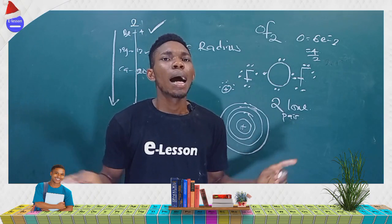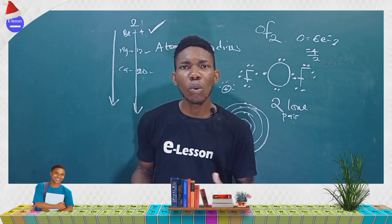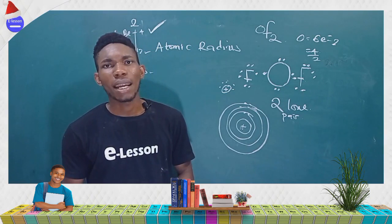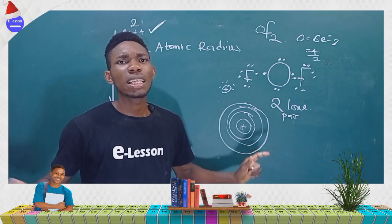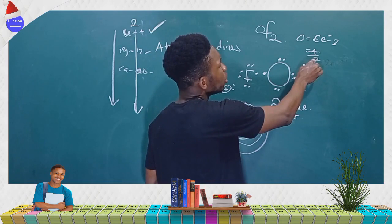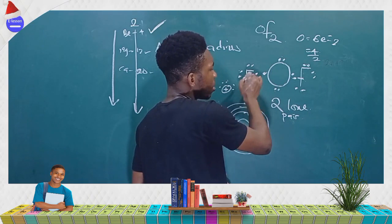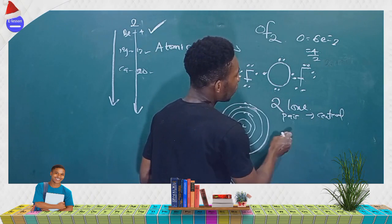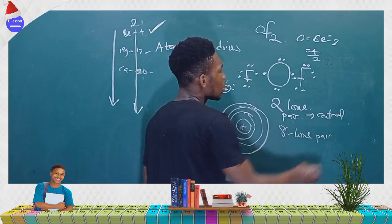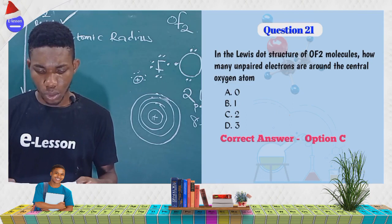If the question asks for lone pairs in the entire OF₂ molecule — including both fluorine atoms — you count all non-bonding electrons. Each fluorine has 3 lone pairs (6 non-bonding electrons), so total lone pairs in the molecule = 2 (oxygen) + 3 + 3 (fluorines) = 8. But for the central oxygen atom only, the answer is 2 lone pairs — option C.